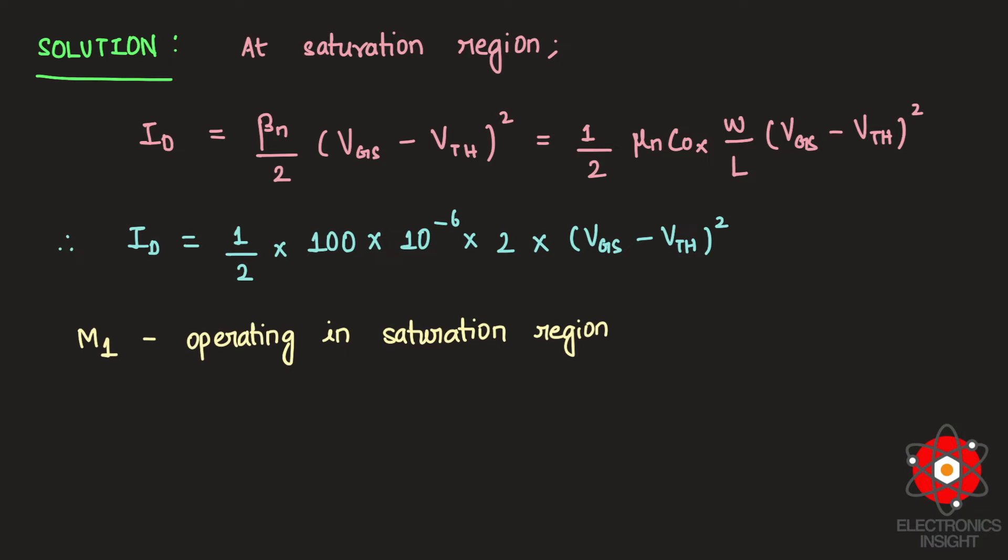We know very well about the voltage conditions for a transistor to operate in saturation region where the condition is VDS should be greater than or equal to Vgs minus Vth. Therefore, the NMOS is operating in saturation region at VDS equal to Vgs minus Vth.